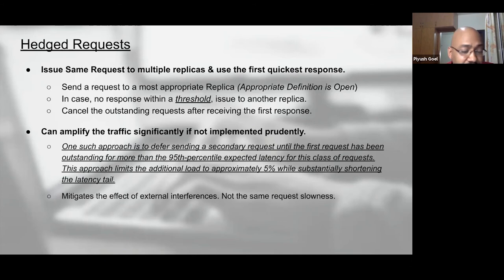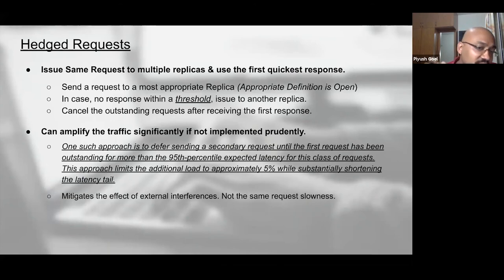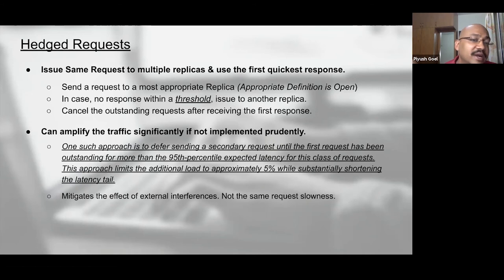If you're firing a request that has to fetch 1000 records, the latency to fetch those 1000 records will stay constant assuming no external interferences. This technique is not going to help you mitigate that inherent slowness. That's something very critical to understand when talking about hedging requests.